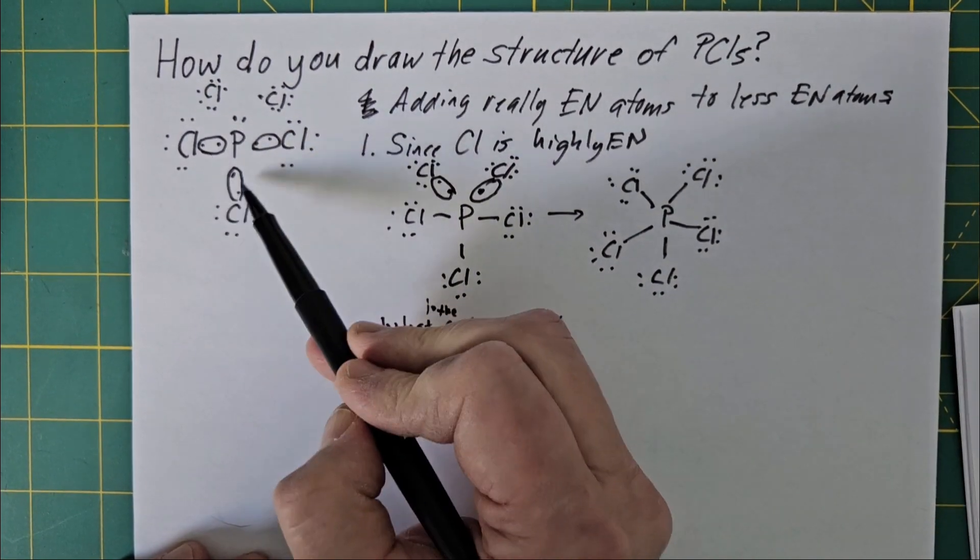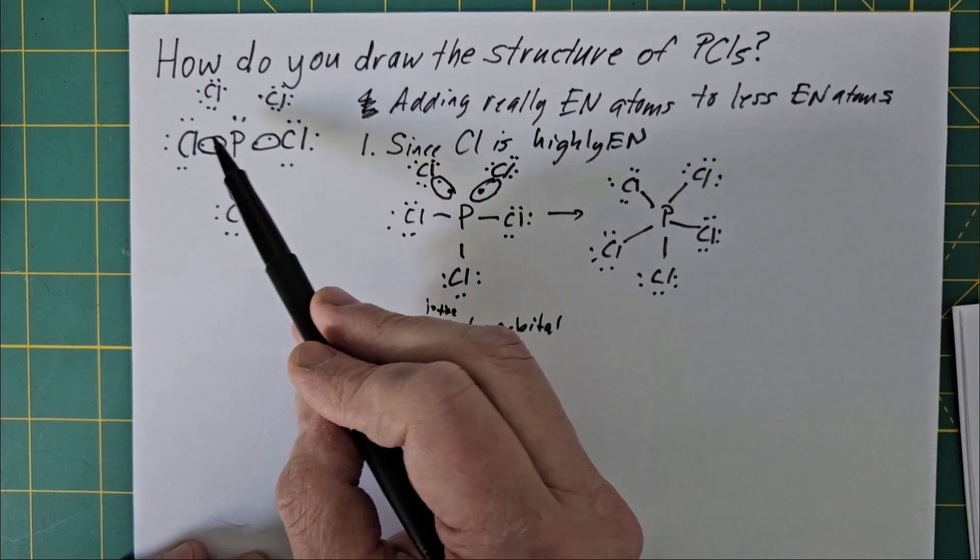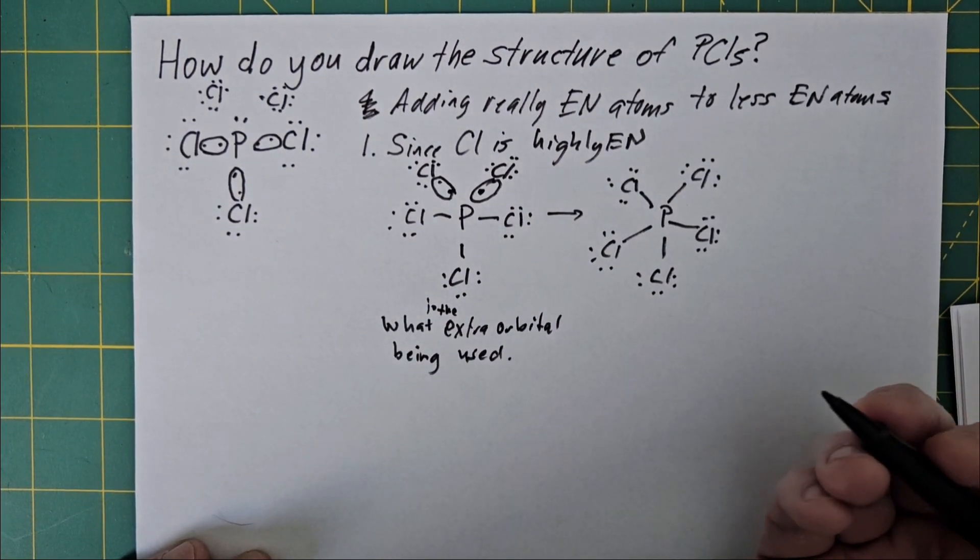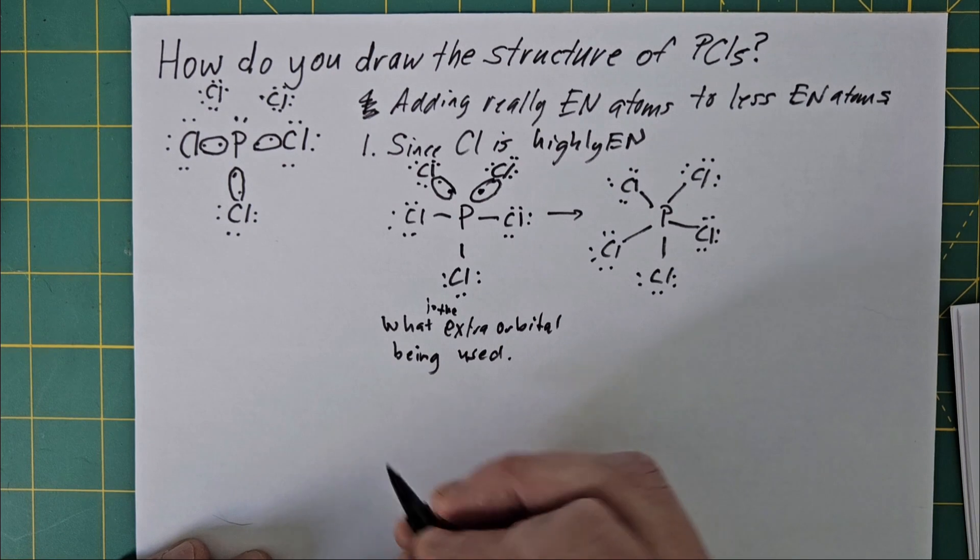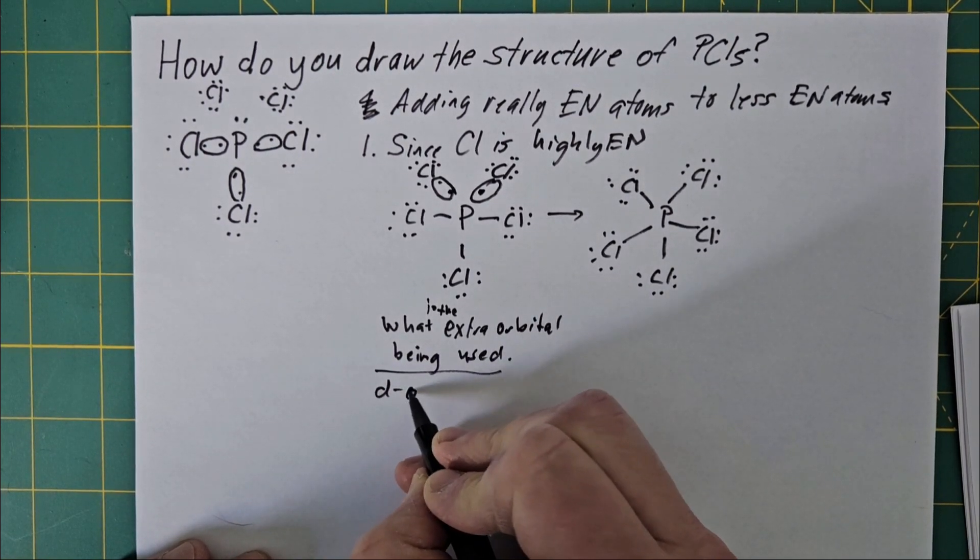So you already have one, two, three, four, so you've got your s orbital and your 3p orbitals. So where to go if those are all filled? Well, one candidate is the d orbitals.